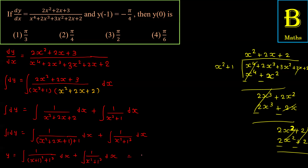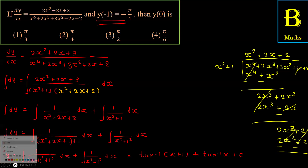Formula apply करने पर: पहले part का answer = tan⁻¹(x + 1) (क्योंकि a = 1, u = x+1)। दूसरे part का answer = tan⁻¹(x)। तो y = tan⁻¹(x + 1) + tan⁻¹(x) + C। यह result दिए हुए condition से verify करेंगे।